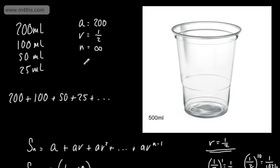So we can say now the sum to infinity or the value that it'll tend to will be 200, that's a, over 1 minus r and r is 1/2. So we got 200 over 1/2. So we can say the sum to infinity will be equal now to 400.